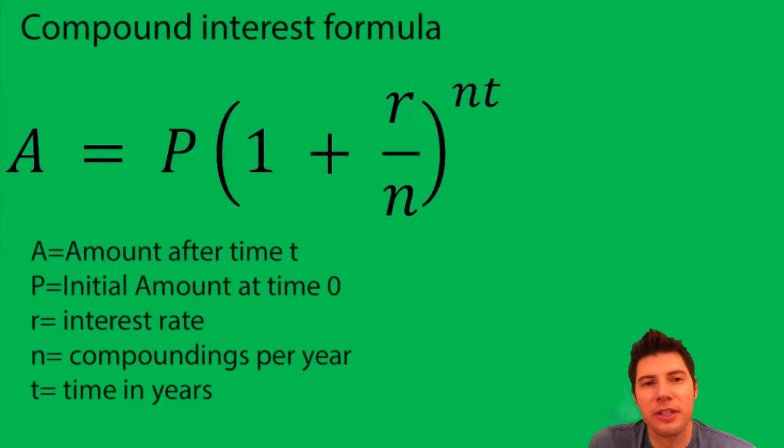The A here is the amount after time T. The P is the initial amount at time zero.